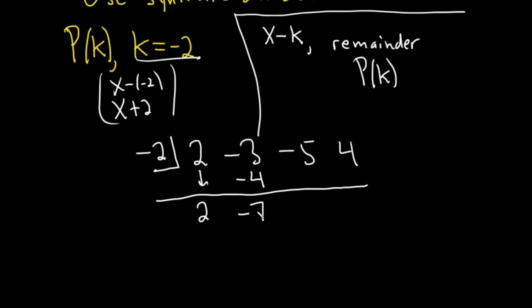Then you multiply: negative 7 times negative 2 is 14. Then you add and that's 9. Then you multiply: 9 times negative 2 is negative 18. Then you add and that's negative 14.